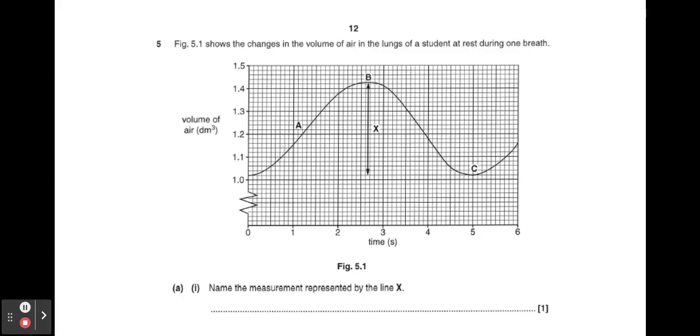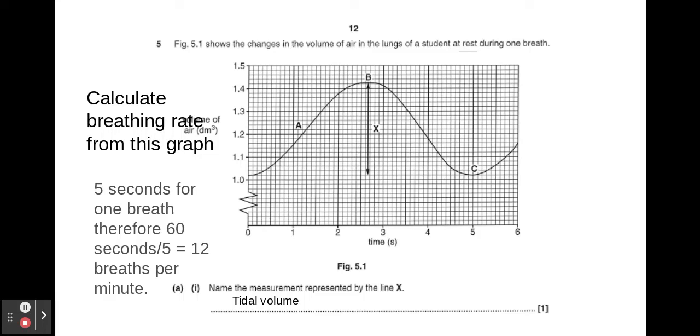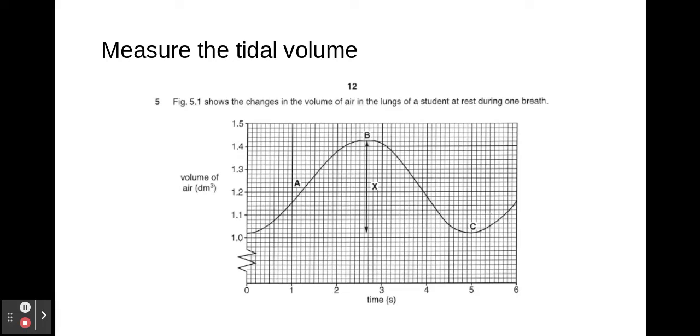If you want to pause the video and have a go at this you can. The measurement represented by x is tidal volume. You could also be asked to calculate breathing rate from a graph like this. You need to calculate the rate of one breath, which in this case is five seconds, and you do 60 seconds divided by five. That's 12 breaths per minute.